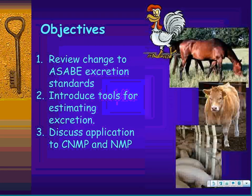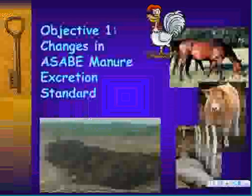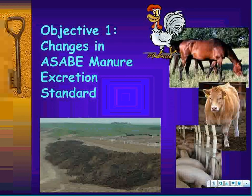We have three objectives for today. First, I want to review the contents of the standard. We're also going to introduce some tools for estimating excretion, two tools in particular. And then I'd like to share some thoughts on potential applications of this standard in the planning processes we're involved in. Let's start with Objective 1, looking at the ASAE standard and its contents.